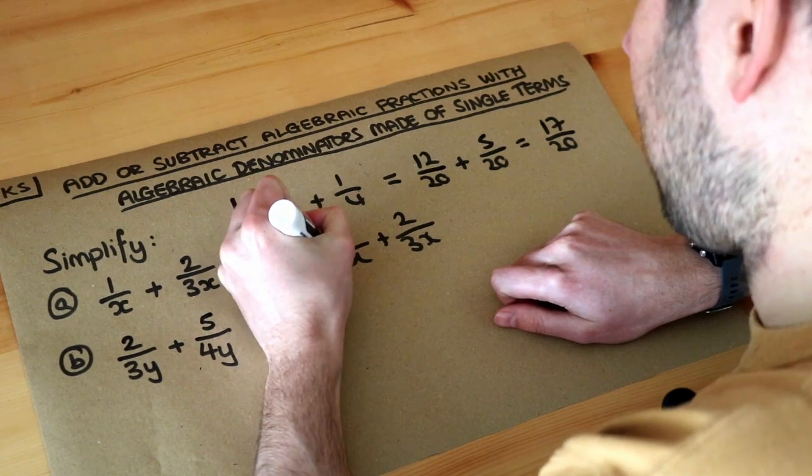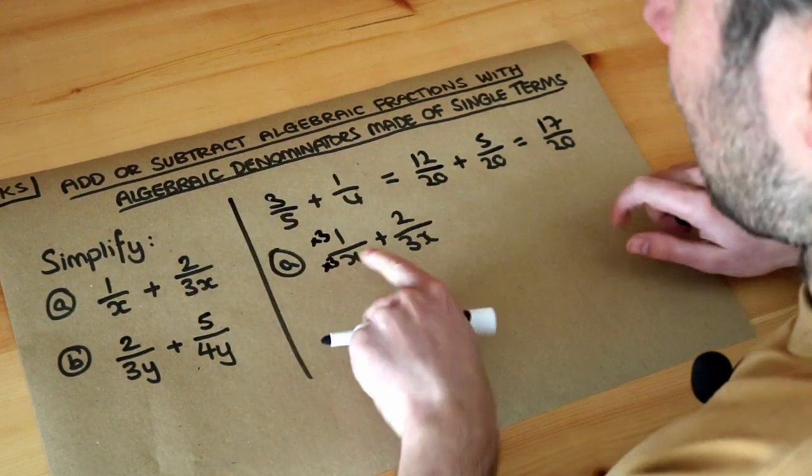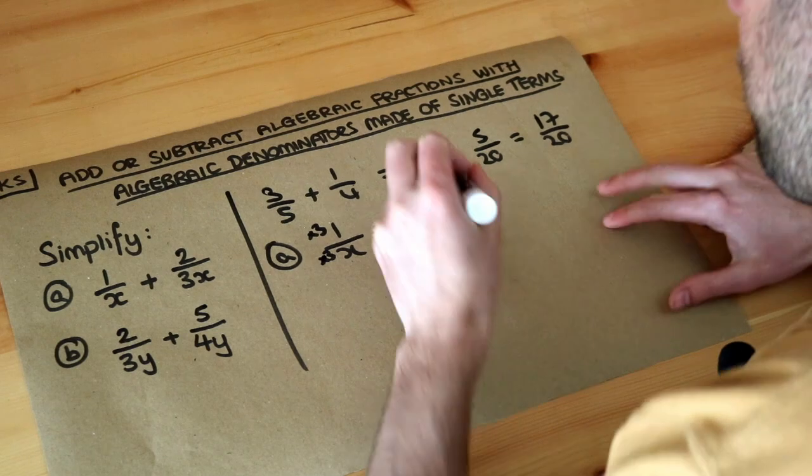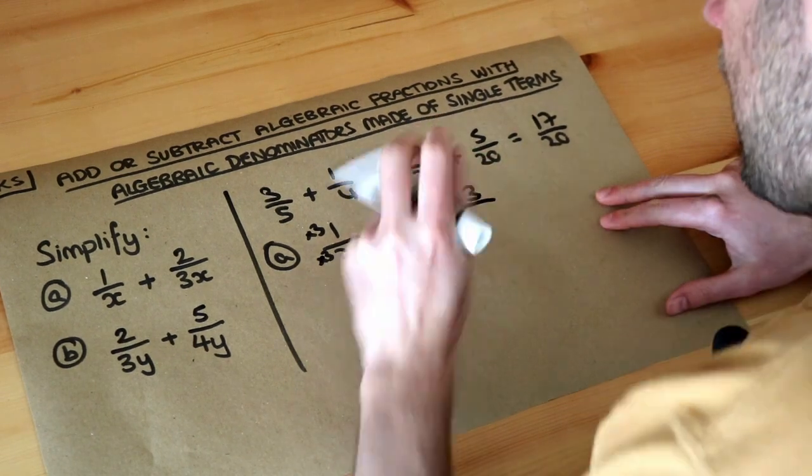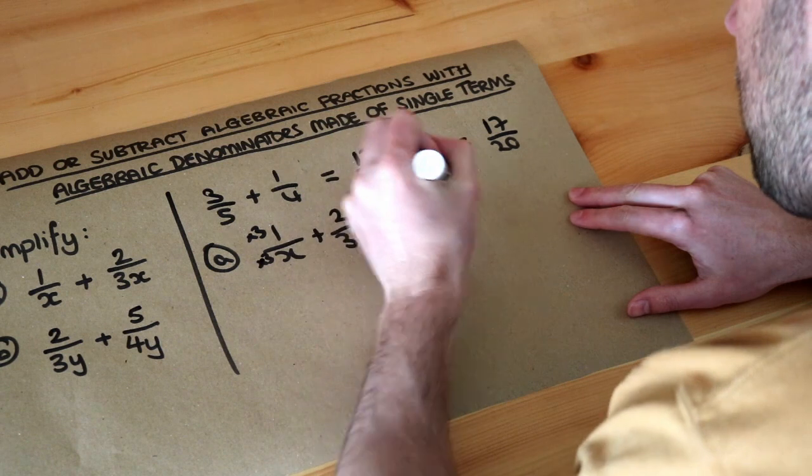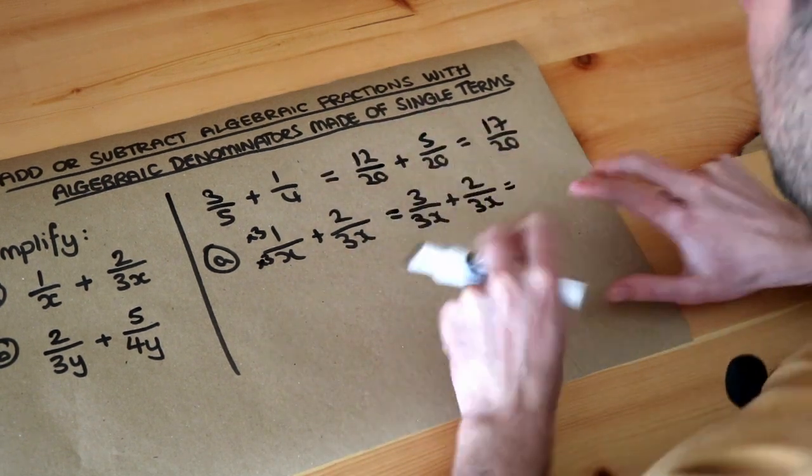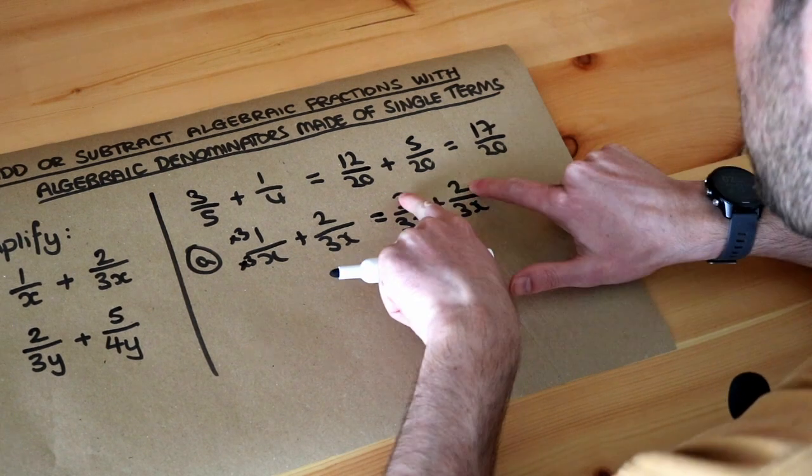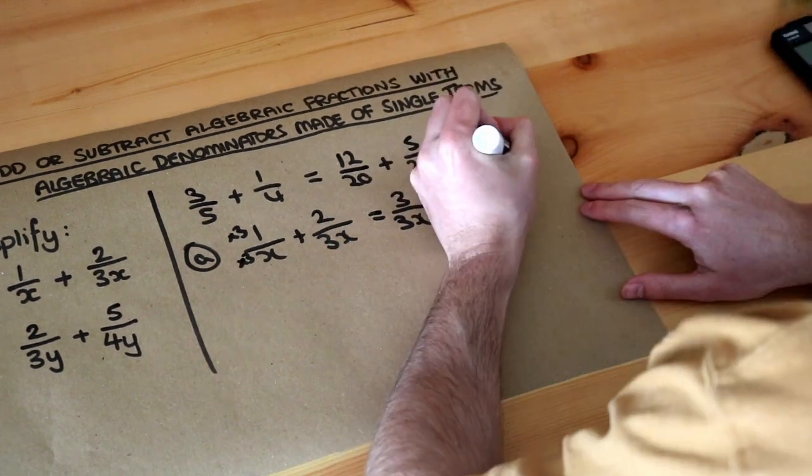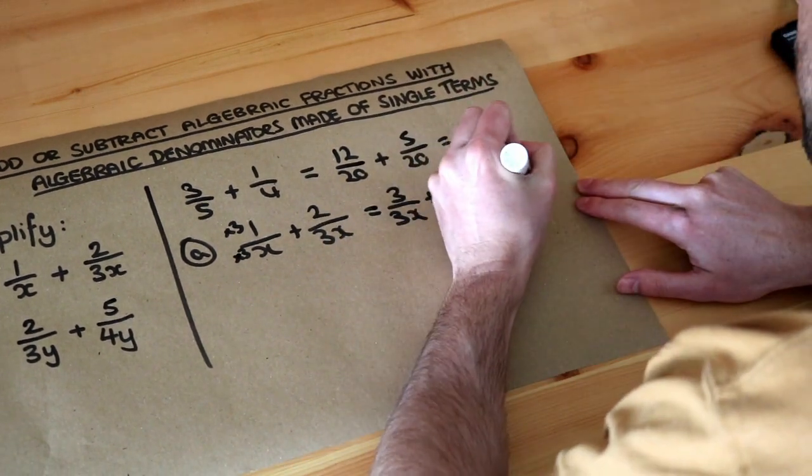So I'm going to multiply the top and bottom by three. That means 1 times 3 is 3, and x times 3 is 3x, plus the 2/3x that we already had. That doesn't change. Now because we've got the same denominator, we add the numerators. 3 plus 2 is 5 over 3x, and that's the final answer.